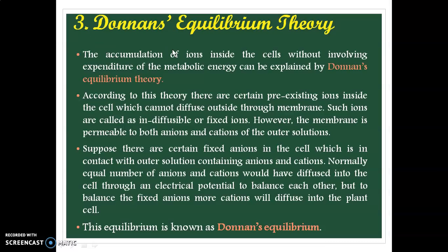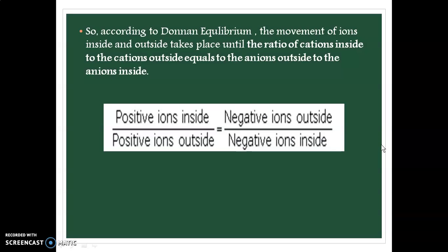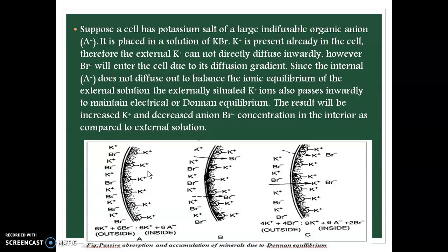Third is Donnan equilibrium theory. This theory explains the accumulation of ions inside the cell without involving the expenditure of metabolic energy. According to the Donnan equilibrium, there are some ions which are non-diffusible, meaning they are present on the surface of the cell and are unable to move across the membrane. These non-diffusible ions are typically large anions fixed within the cell.